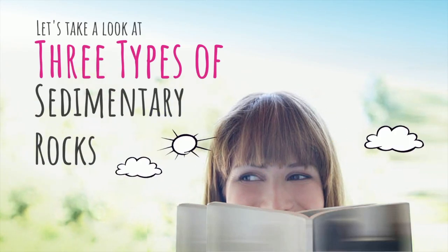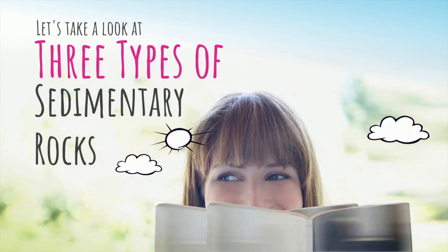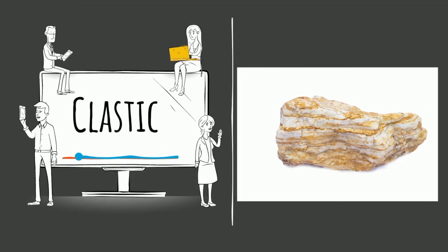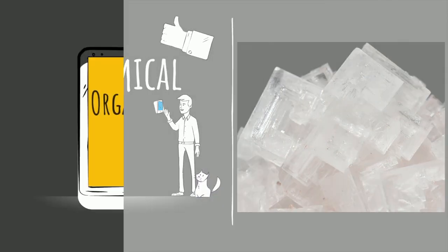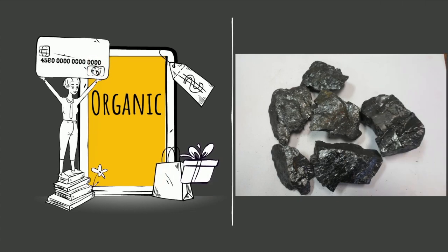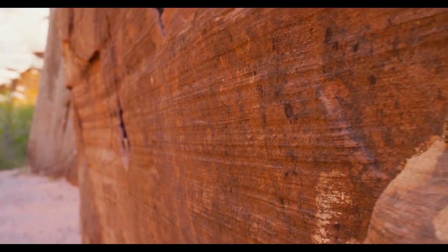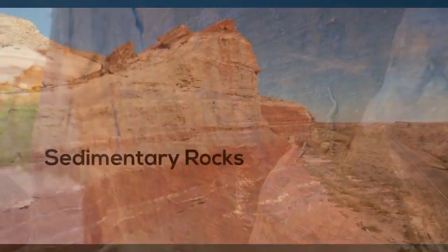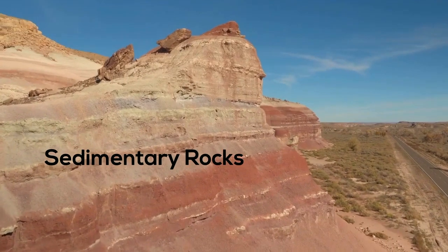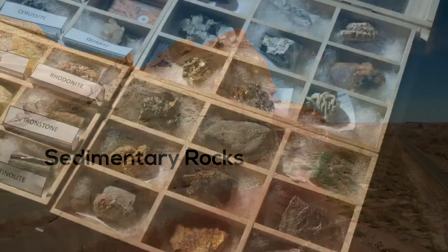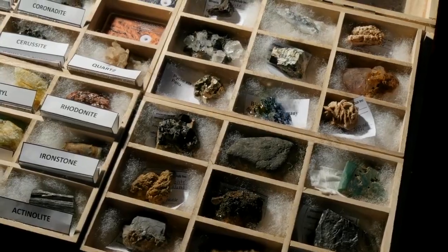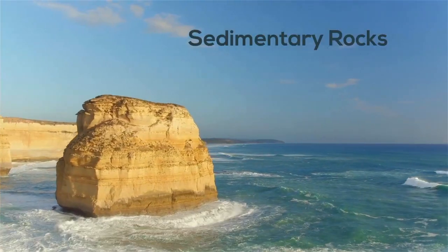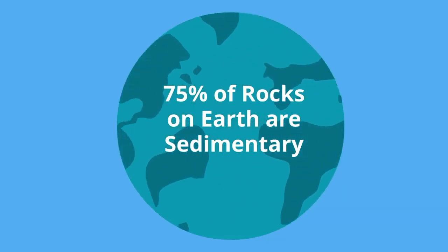Let's take a look at three types of sedimentary rocks: clastic, chemical, and organic. This rock wall is an example of sedimentary rock. Sedimentary rocks are derived from igneous, sedimentary, and metamorphic rocks, and they make up around 75% of the rocks on the earth's surface.